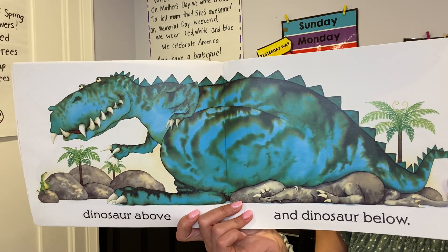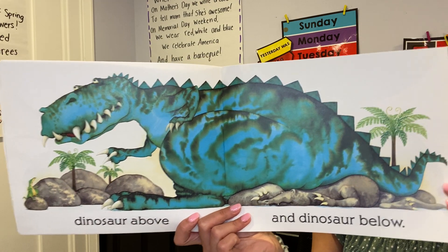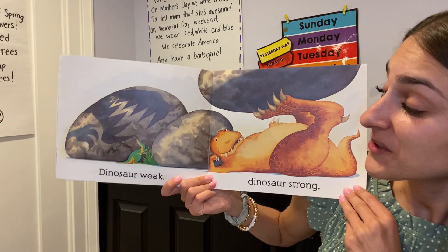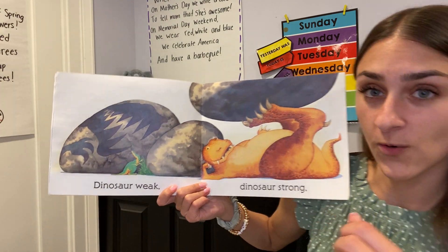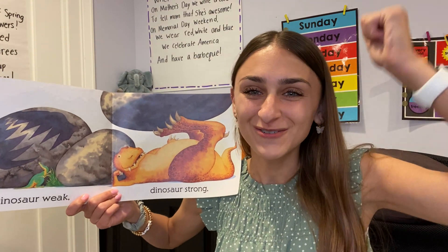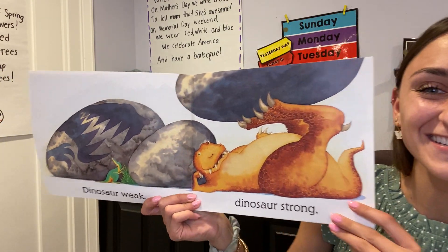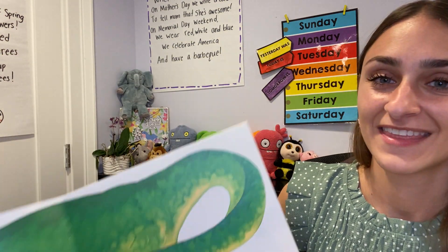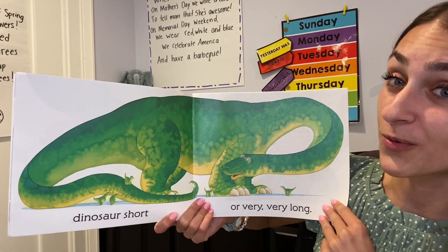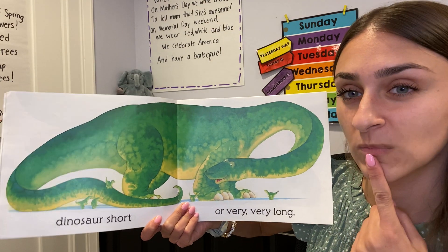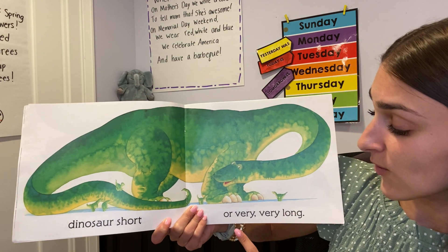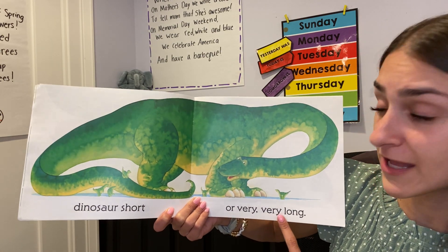Look at that big dinosaur. Dinosaur Weak. Dinosaur Strong. Can you show me your strong muscles? Weak and strong are opposites. Dinosaur Short. What is the opposite of Short?